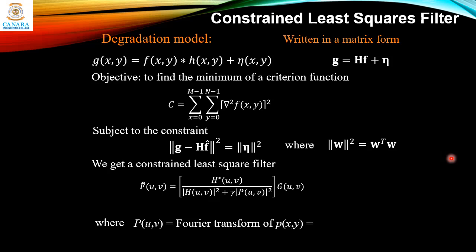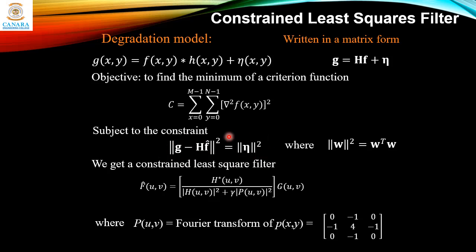Here P(u,v) is the Fourier transform of p(x,y), which is the Laplacian operator studied in the second module. The parameter γ must be adjusted so that the constraint ‖g − Hf̂‖² = ‖η‖² is satisfied. We should adjust γ to satisfy this constraint.